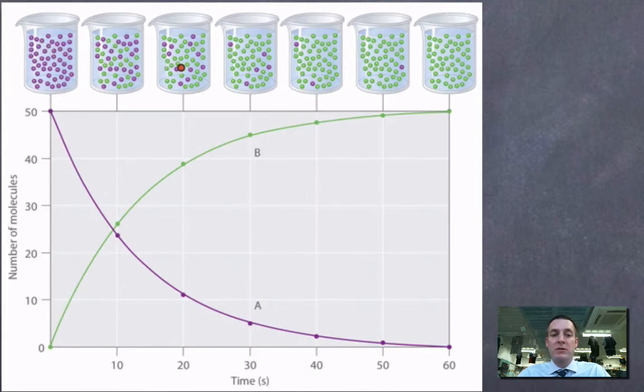So the amount of purple particles is falling. You can see this line here showing that gradual fall in the number of molecules of A, and that's accompanied by a gradual rise in the amount of molecules of B. And because the gradients of these lines are the same, this shows us that there is one particle of B formed for every particle of A.